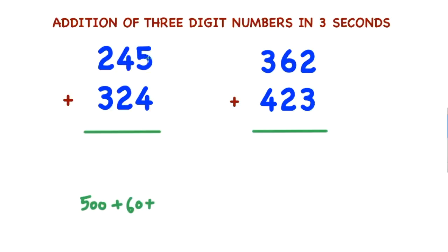Now in the units place, 5 plus 4 — 5 plus 4 is 9. So the addition of these two numbers is 569.